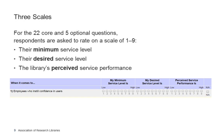LibQual's core survey questions use a triple Likert scale, where users are asked to evaluate a statement related to a distinct aspect of service quality — for example, 'library space that inspired study and learning.' They give three ratings: minimum, desired, and perceived. The perceived rating represents the level of service the user believes the library currently provides. The minimum rating represents the minimum level of service the user would find acceptable, while the desired rating represents the level of service the user personally wants, or their ideal level of service.